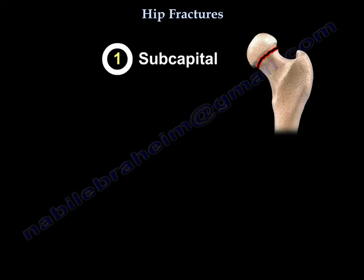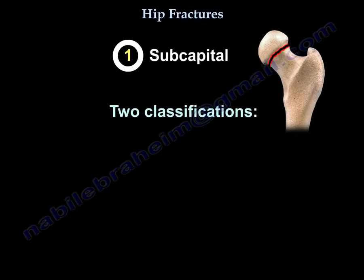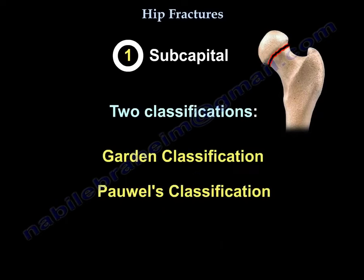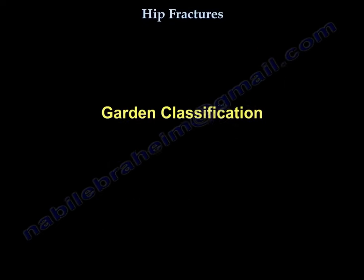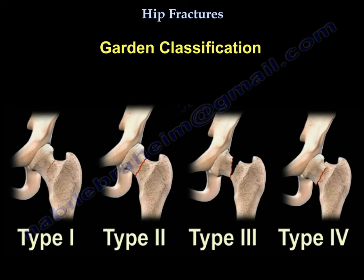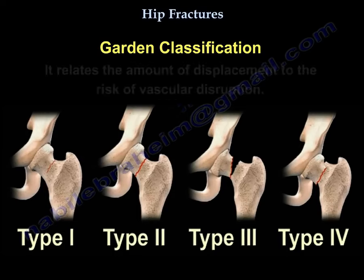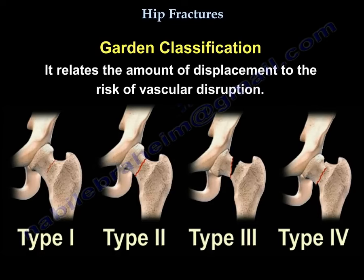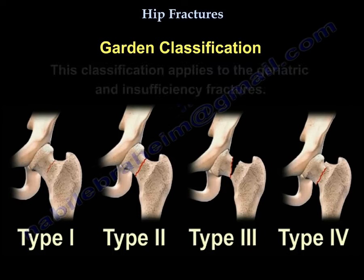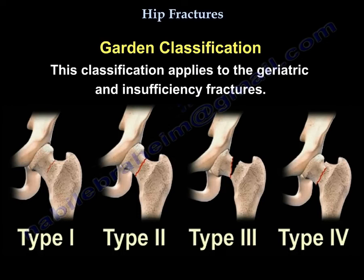The sub-capital fracture has two famous classifications: the Garden classification and the Pauwels classification. The Garden classification classifies fractures according to the degree of displacement and relates the amount of displacement to the risk of vascular disruption. This classification applies to geriatric and insufficiency fractures.